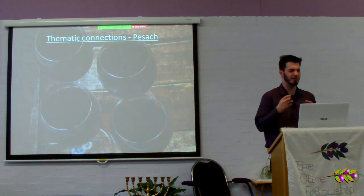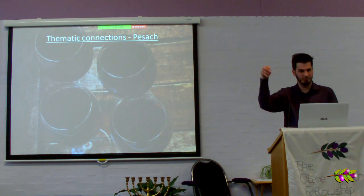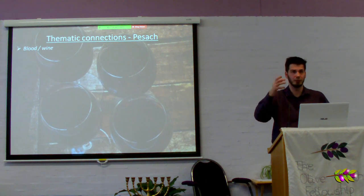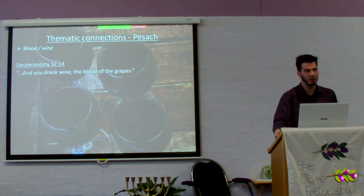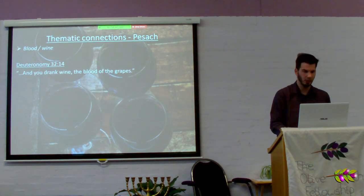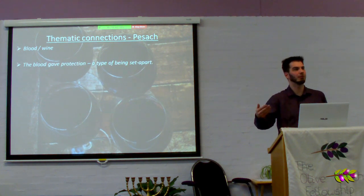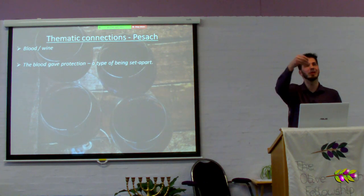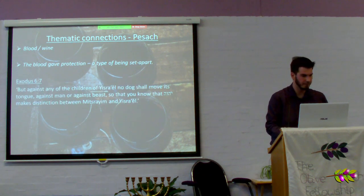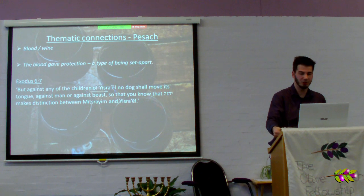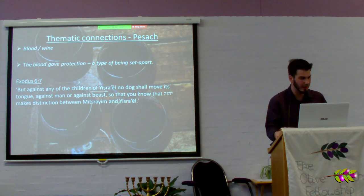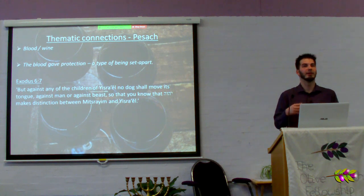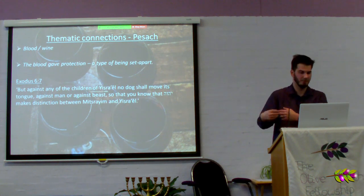Let's look at all the thematic connections between the Moadim and the ancient Hebrew wedding model. In Passover, Pesach, you have blood which is equated to wine — scripture shows this: 'You drank wine, the blood of grapes,' in the Song of Moses. The blood gave protection to the Israelites, and was actually a type and shadow of being set apart. 'But against any of the children of Yisrael, no dog shall move its tongue, against man or beast, so that you know that Yah makes distinction between Mitzrayim and Yisrael.' This was the death of the firstborn, and this is what set Yisrael apart — it was the blood.